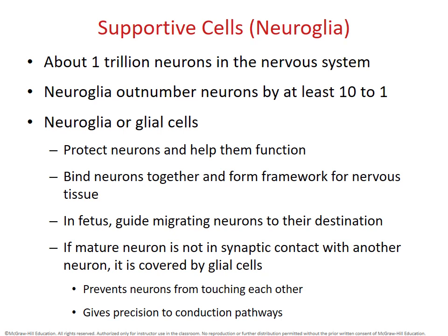Now it's time to talk about the second type of cell in nervous tissue, which are the glial cells or neuroglia. Interestingly enough, glial cells outnumber neurons by a factor of 10. Even though neurons are the functional cells of the nervous system, glial cells are the more numerous type, providing supportive functions. About a 10-to-1 ratio means there are about a trillion neurons and perhaps as many as 10 trillion glial cells. Glial cells tend to physically protect neurons and metabolically support them, forming a connective tissue-like matrix within which nerve cells reside.